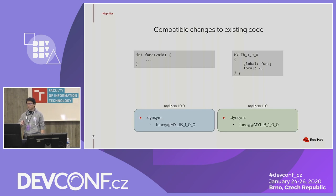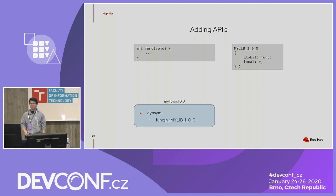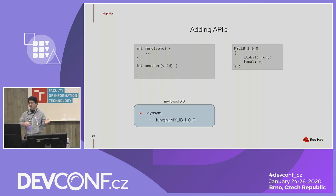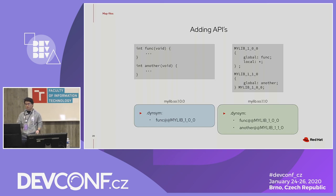Applications linked against the old version of the library will continue to work because they will find the symbols with the old version there. You can optionally add an empty version node just to explicitly state that you are not adding any new APIs in this version. Adding APIs is probably the most common change you want to make to your library. If you add a new API, you have to add a new version node containing that symbol to be exported, and the new version of the library will contain both the old and new symbols.